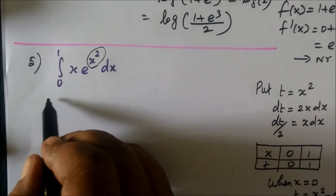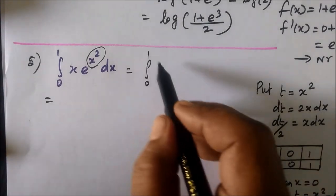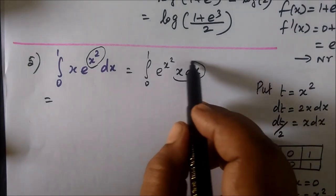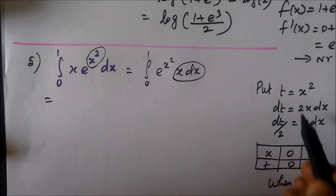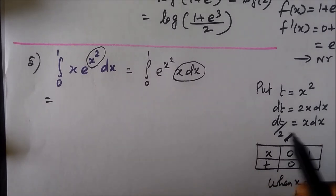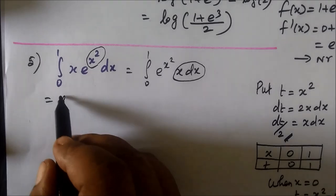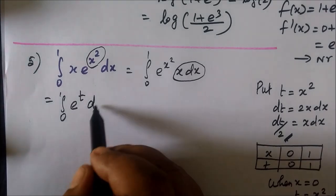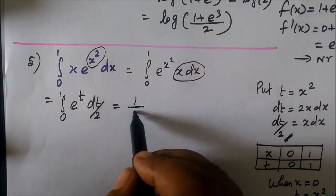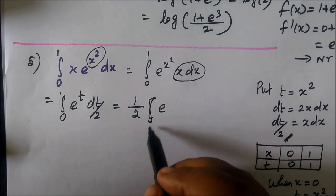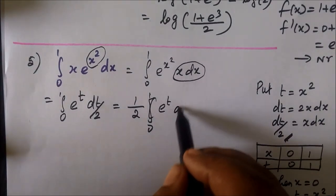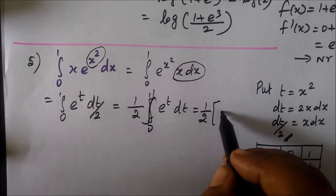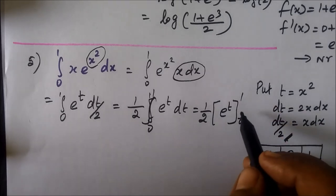Now apply the substitution. The integral becomes integral from 0 to 1 of e^(x²) · x dx, and we substitute x dx with dt/2. So the integral equals integral from 0 to 1 of e^t · (dt/2), which is (1/2) times integral from 0 to 1 of e^t dt. Integrating e^t gives e^t, evaluated from 0 to 1.